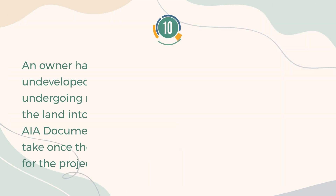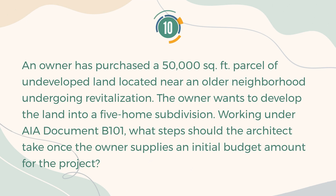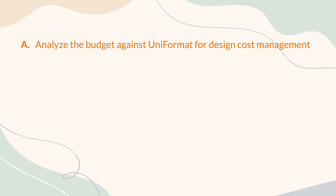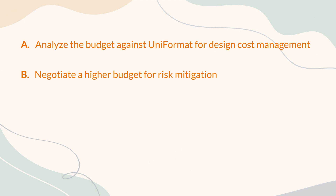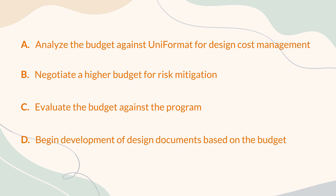Number 10. An owner has purchased a 50,000 square foot parcel of undeveloped land located near an older neighborhood undergoing revitalization. The owner wants to develop the land into a five-home subdivision. Working under AIA document B101, what steps should the architect take once the owner supplies an initial budget amount for the project? A. Analyze the budget against Uniformat for design cost management. B. Negotiate a higher budget for risk mitigation. C. Evaluate the budget against the program. D. Begin development of design documents based on the budget.